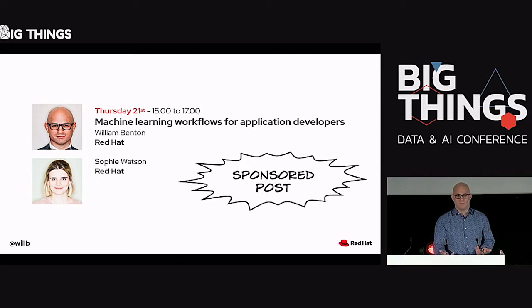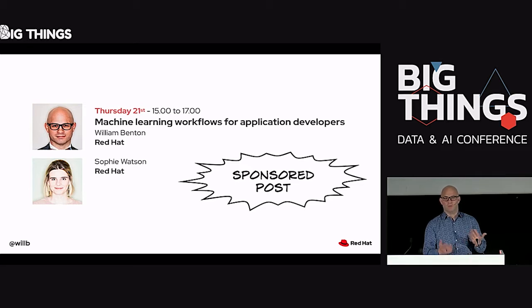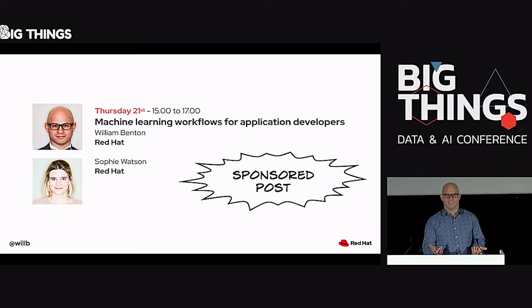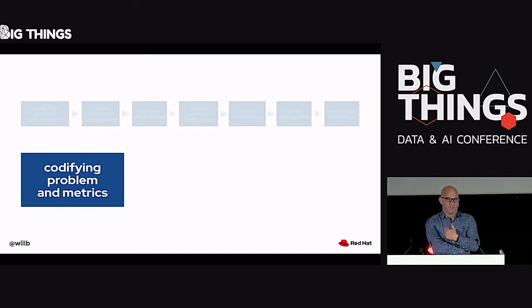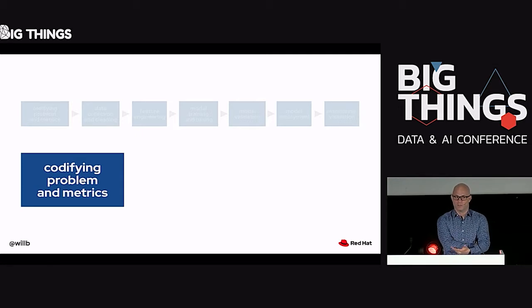Let's look at machine learning workflows in the context of a concrete problem everyone understands: spam filtering. The thing with spam filtering is it's made it possible to use email, and it's actually a very early commercially successful application of machine learning. We've been using machine learning for spam filtering for over 20 years.